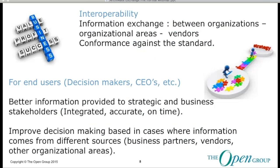For end users and decision makers — for example, CIOs and other key stakeholders — having the possibility to inter-exchange models will allow better information for strategic and business decisions. Market pressures are forcing businesses to interact with customers, business partners, alliances, and other organizational bodies throughout a whole value chain. It's really key to have a way to interchange architectural descriptions and have a unified view of all this.